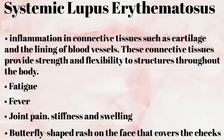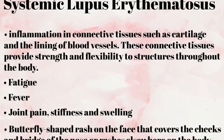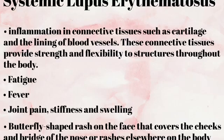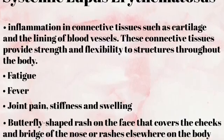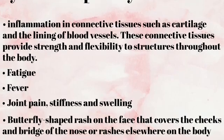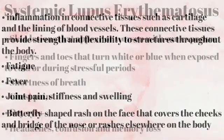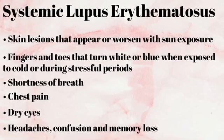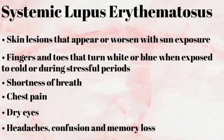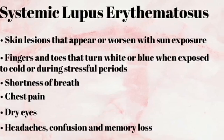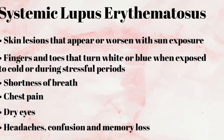The first of the three connective tissue diseases associated with MCTD is Systemic Lupus Erythematosus — it's lupus. Symptoms of lupus include inflammation in connective tissues such as cartilage and the lining of blood vessels, which provide strength and flexibility to structures throughout the body. Additional symptoms include fatigue, fever, joint pain, stiffness and swelling, a butterfly-shaped rash across the face and rashes on the body, skin lesions that appear or worsen with sun exposure, fingers and toes that turn white or blue in the cold (Raynaud's), shortness of breath, chest pain, dry eyes, headaches, and confusion and memory loss.